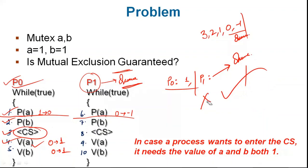Simply, you need to remember the semaphore or counting semaphore operation: if the semaphore's value goes below 0, send the process to the waiting queue. It will only exit the waiting queue when some other process leaves the critical section. So in this case, mutual exclusion is guaranteed. Let's solve the next question.